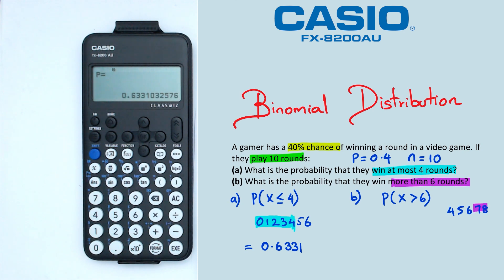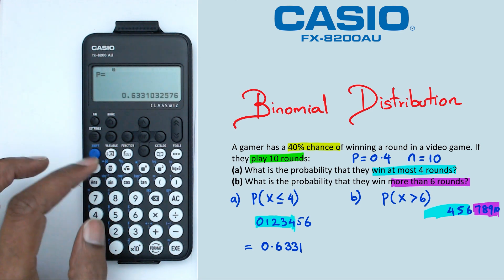If we're looking for more than 6, we're actually looking for 7, 8, 9 and 10. Haven't written down the 9 and 10 values, but basically it's that right there. But our calculator only works up to a number. So what we could do is we could actually use the calculator to find the probability of up to 6 with 6 included, and then do 1 minus that.